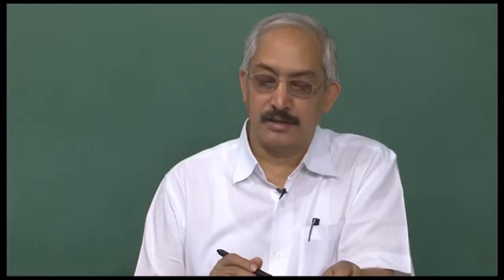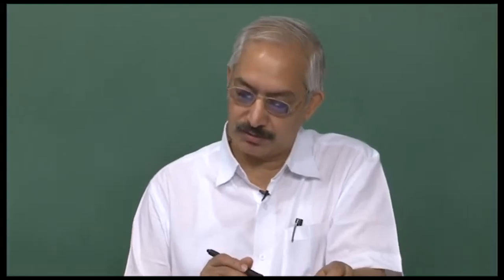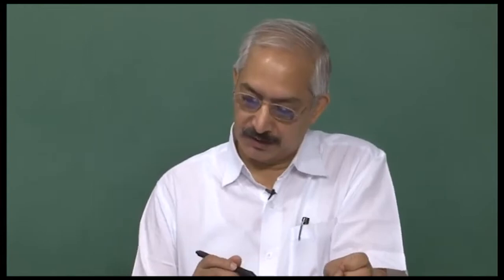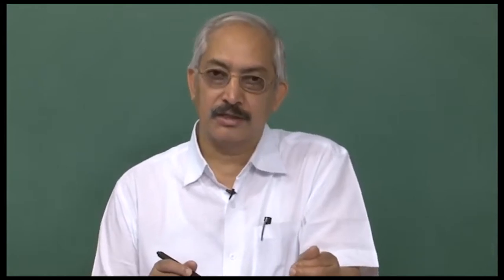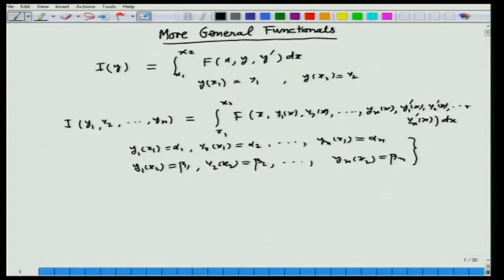All these yi's are assumed to satisfy certain smoothness properties so that this integral is well defined. We would like to find the set of functions y1, y2, ..., yn satisfying a necessary condition — similar to Euler's equation obtained when I(y) = ∫_{x1}^{x2} f(x, y, y') dx — in order for the functional I to have an optimal value.